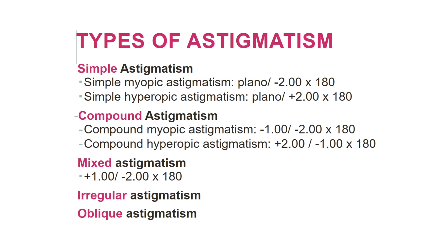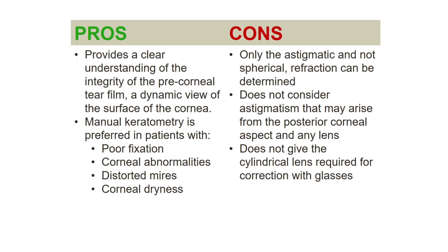There are other types of astigmatism. They include simple, compound, mixed, irregular and oblique. Simple astigmatism is where one focal line falls on the retina and the other may fall in front or behind the retina. For compound, both focal points lie either in front or behind the retina. Irregular is where the flat and steep axes aren't at right angles. Oblique occurs along the 45-degree or 135-degree meridians.